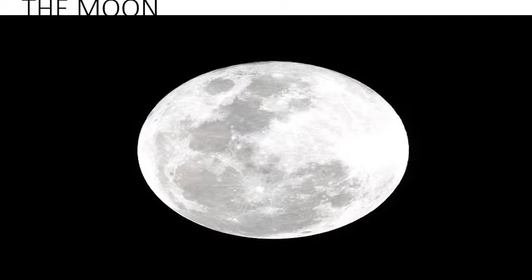Except Mercury and Venus, all the other planets have moons. The moon that we see in the sky is the only satellite of the Earth.